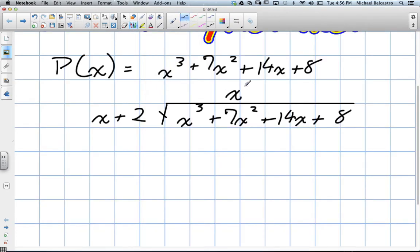So we need to multiply this by x squared. We multiply x squared times x plus 2, that's going to give us x cubed plus 2x squared. We go to subtract. These will cancel out, so we're left with zero. When we subtract these, we get 5x squared.